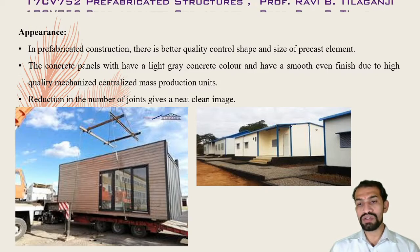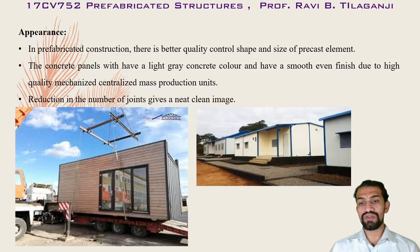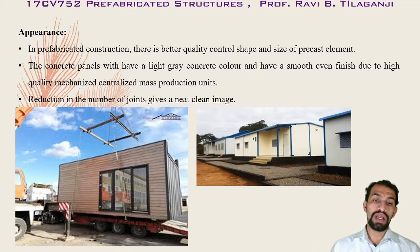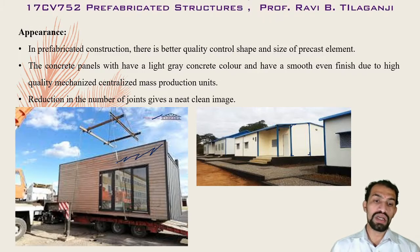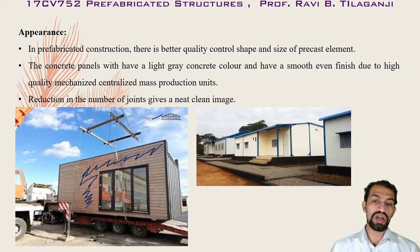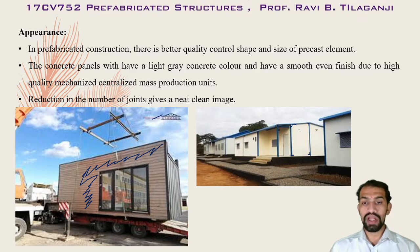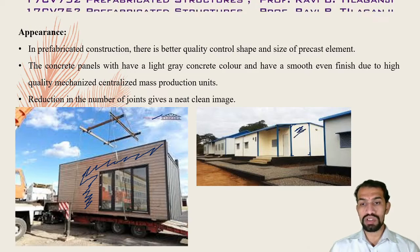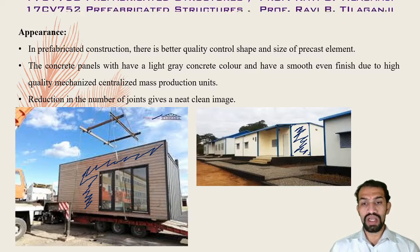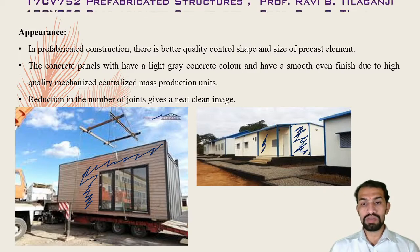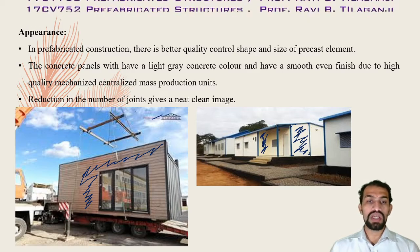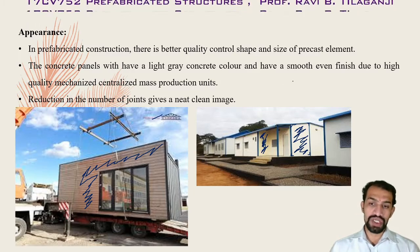Reduction in the number of joints gives a neat, clean image. Fewer joints give a good appearance. The whole panel is prepared as a single concrete panel, which is constructed and then painted, giving it a white color. With less number of joints, these are the appearance characteristics of the precast elements.